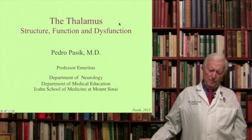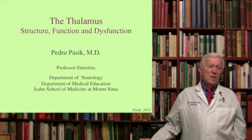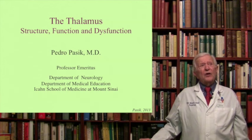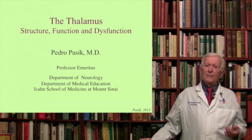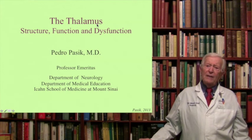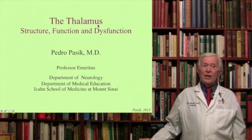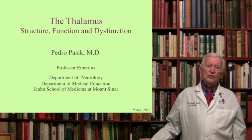Good morning. We have to deal today with a very complex group of nuclei at the base of the brain that derived from the diencephalon — the largest of the structures within the diencephalon — that contains the so-called dorsal thalamus, which I'm referring to today as the thalamus, in addition to the hypothalamus we discussed already, the subthalamus that deals with the basal ganglia system, and the epithalamus that is part of the limbic system. Today we are going to restrict ourselves to the thalamus, or dorsal thalamus, or thalamus proper.